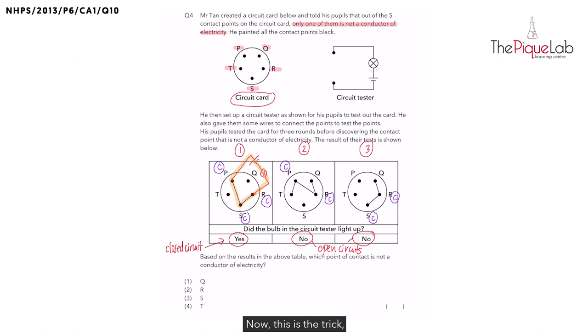Now this is a trick. There are two unknown points in setup 2, Q and T. Either one can be an insulator of electricity. But only one unknown point in setup 3. So I will recommend that we analyze setup 3 since there's only one unknown point.